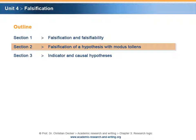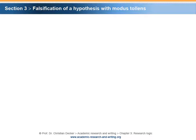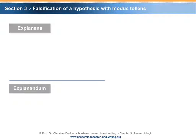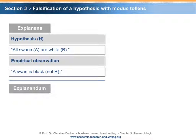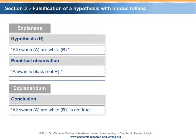Section 2: Falsification of a hypothesis with modus tollens. We already know the logical figure of modus tollens from a previous unit. In the following, we will use modus tollens to explain the logical structure of falsification. Suppose the hypothesis is 'all swans are white.' An empirical observation might lead to the statement 'a swan is black.' This leads to the conclusion that the initial hypothesis 'all swans are white' is not true — thereby, the initial hypothesis has been falsified.